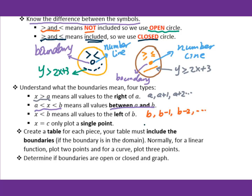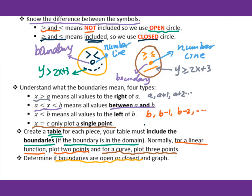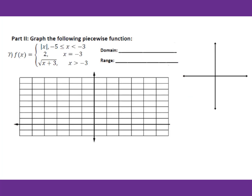When x equals a single value, plot just a single point. Remember: create a table for each piece, and your table must include the boundaries if the boundary is in the domain. Normally for a linear function, plot two points, because two points determine a straight line. For a curve, plot at least three points. Last step: determine if the boundaries are open or closed circles, and then graph.